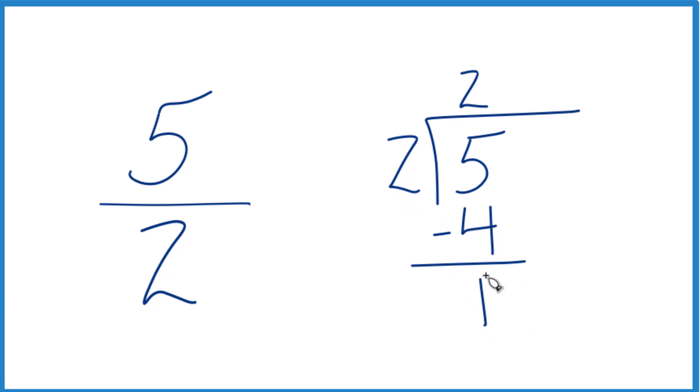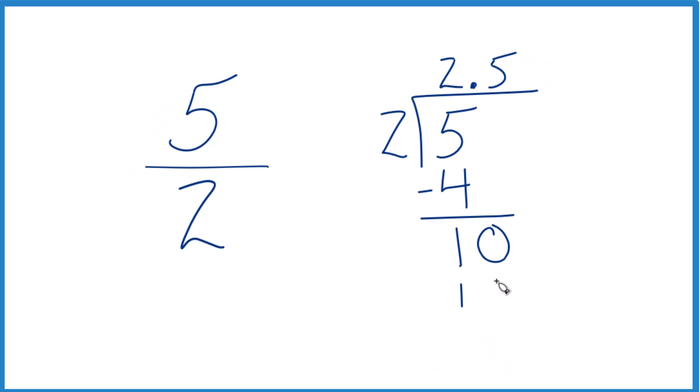But 2 doesn't go into 1. So what we can do is put a decimal point here and put a 0 here. And now 5 times 2, that's 10, subtract, no remainder.